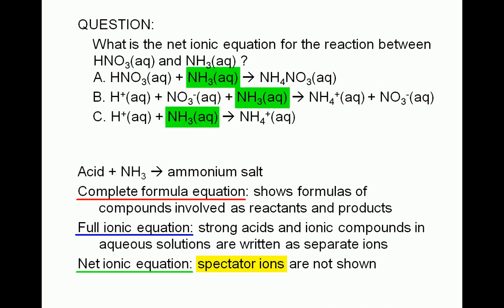Finally, the ammonium nitrate is an ionic compound. When writing the full ionic equation, it should be written as separate ions, as in choice B. Choice B is, in fact, the full ionic equation.